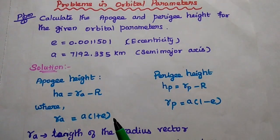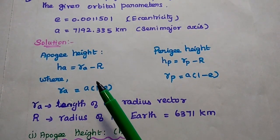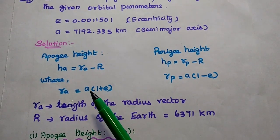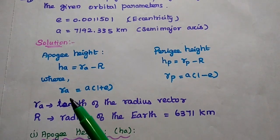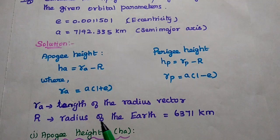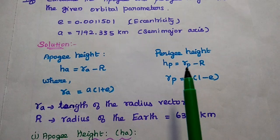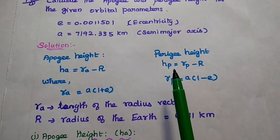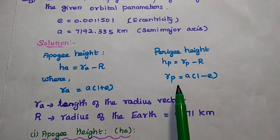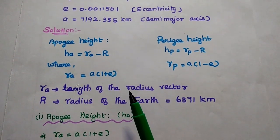Next we are going to find out apogee and perigee heights. The formulas are: apogee height HA is equal to RA minus capital R, where small RA is equal to A into (1 plus E). This RA represents the length of the radius vector of the apogee point from the geographical radius of the earth. Next, perigee height HP is equal to RP minus capital R, where RP is equal to A into (1 minus E). Capital R represents the radius of the earth.